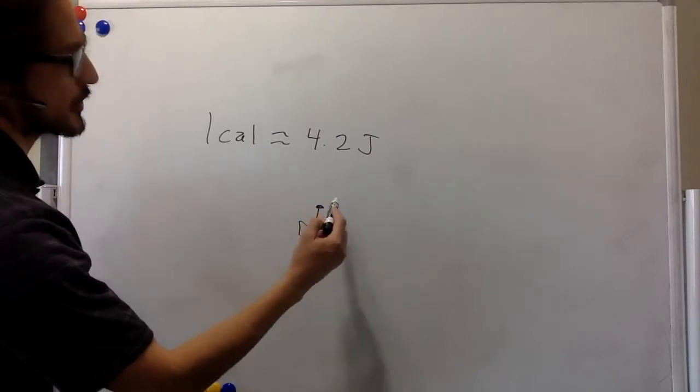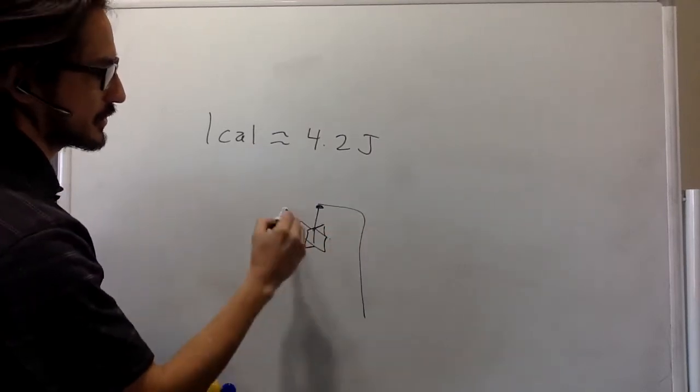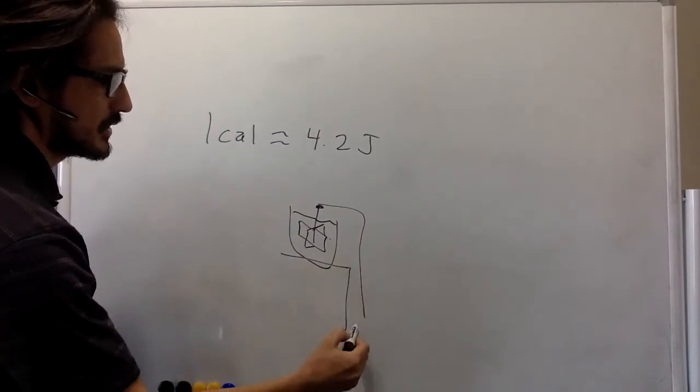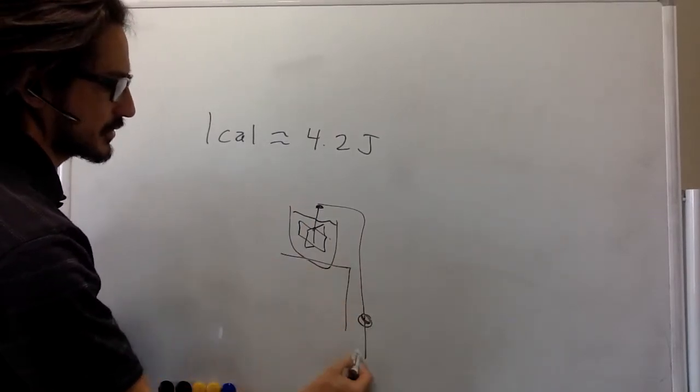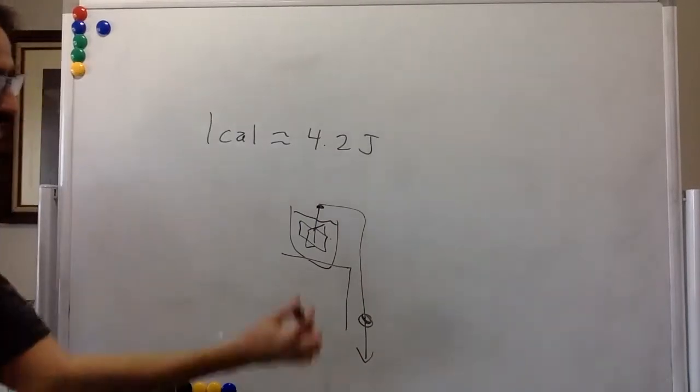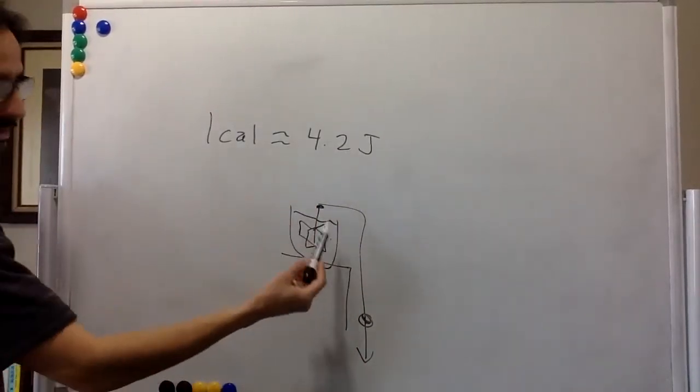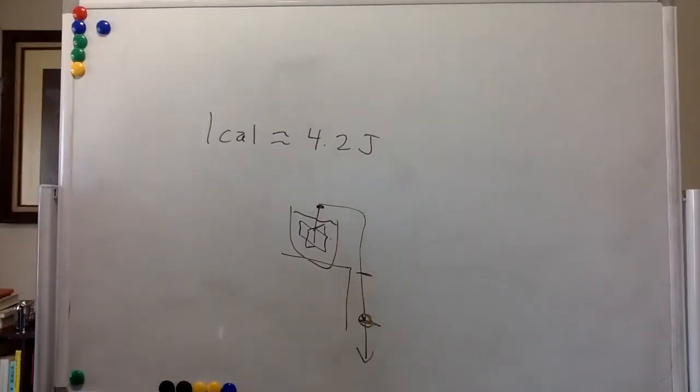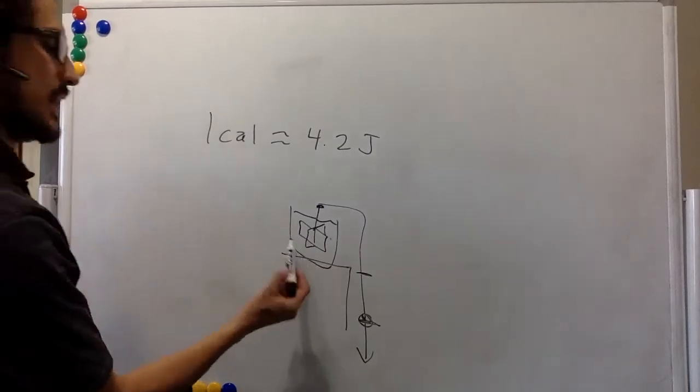And with some torque over here, so this would be in a liquid on a table. And then they would let an object fall, and so the paddle would move around. And they know the change of potential energy from the height of the table or whatever.